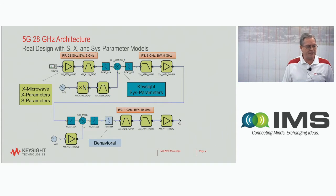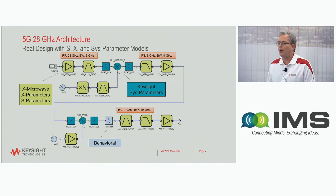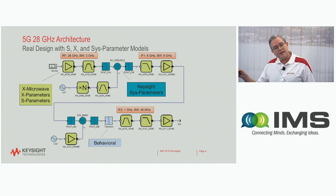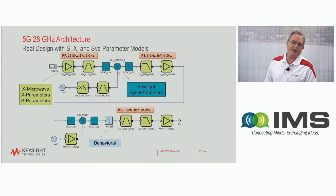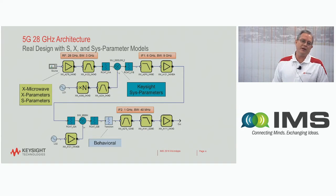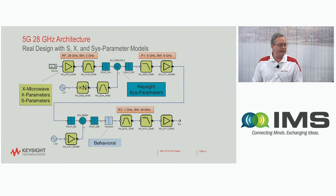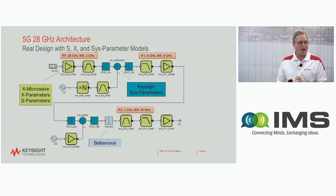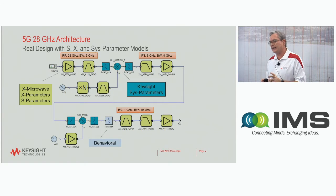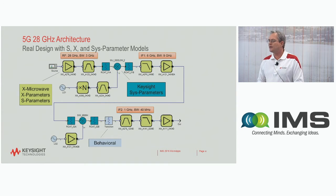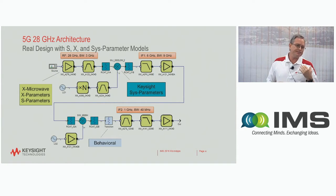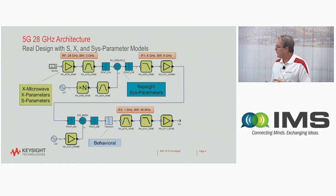Here's a little 5G system that we built with off-the-shelf parts. This works at 28 gigahertz — this is a receiver. We've got a front end, the bandwidth is 3 gigahertz wide, then we down-convert to a 6 gigahertz IF, use a low-pass filter to filter that, run through a second conversion, and then we have a gigahertz at the output. What you should notice in this slide is the green boxes are S-parameters and X-parameters. X-parameters are really just a nonlinear extension of S-parameters, so you can look at harmonics from a particular circuit.